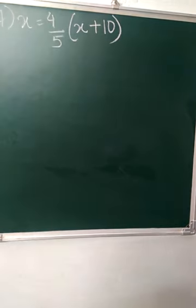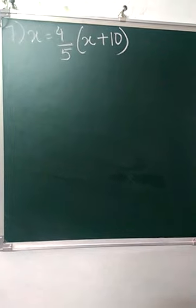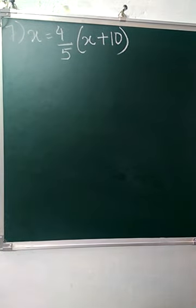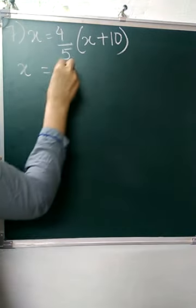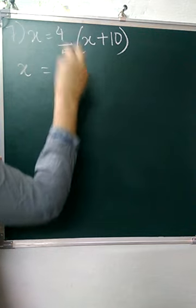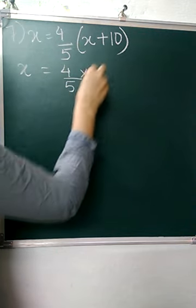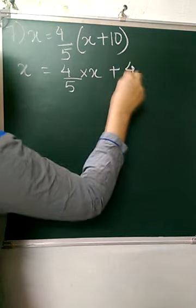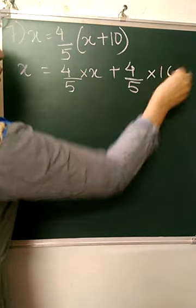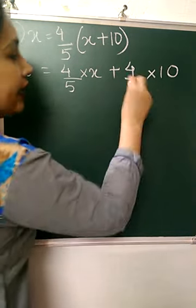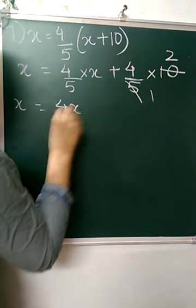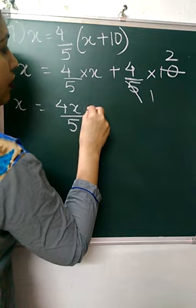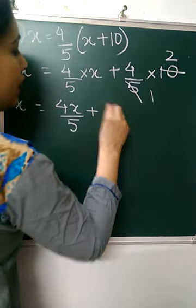Starting with the 7th one. x is equal to 4 upon 5 into (x + 10). The first thing we are going to do is open the bracket. So x equals 4/5 multiplied by x, and 4/5 multiplied by 10. Here, 5 and 10 can get cancelled: 5 ones are 5 twos. So x is equal to 4x upon 5 plus 8.